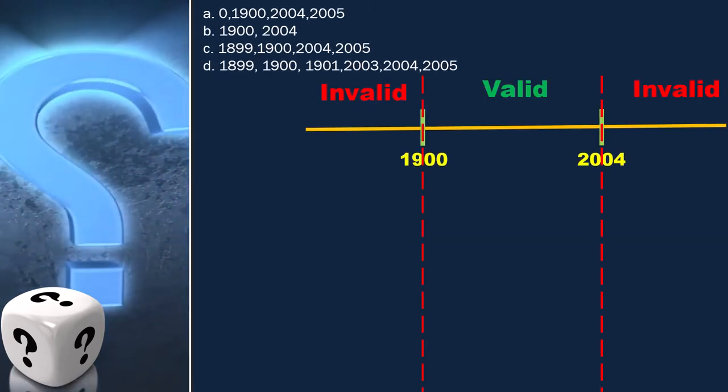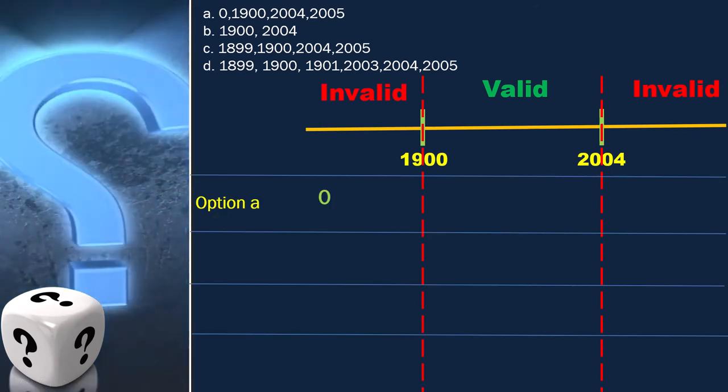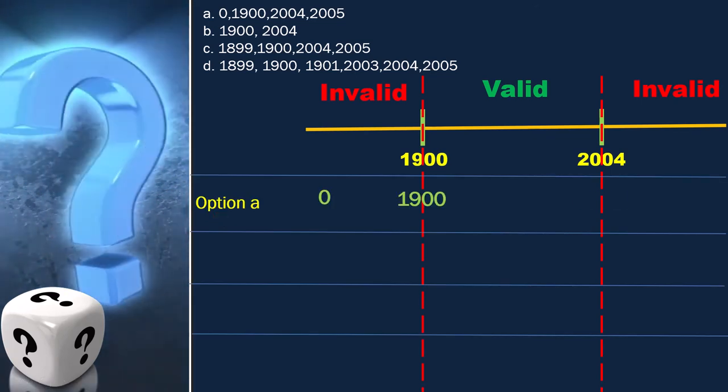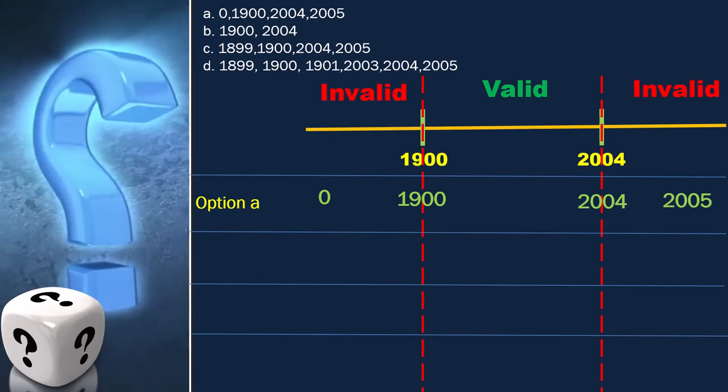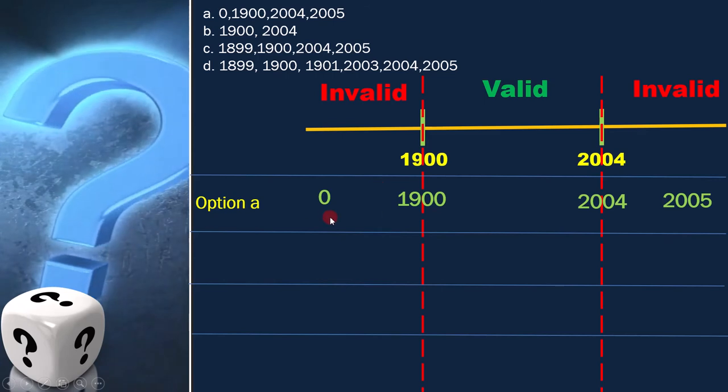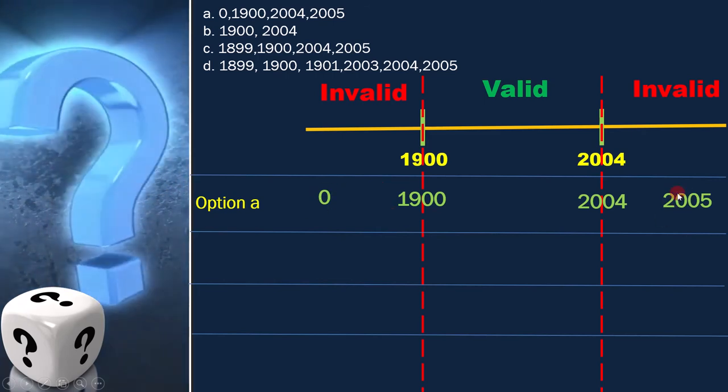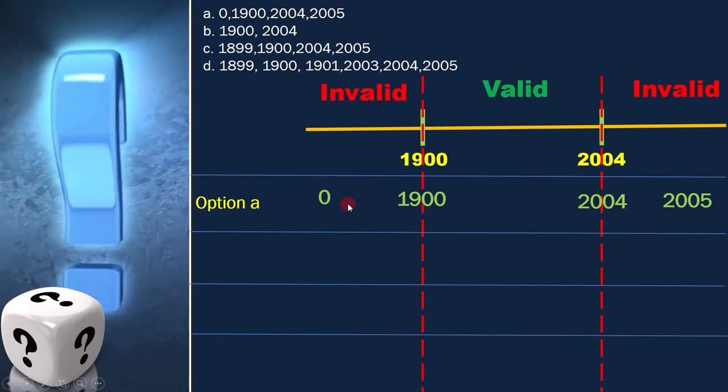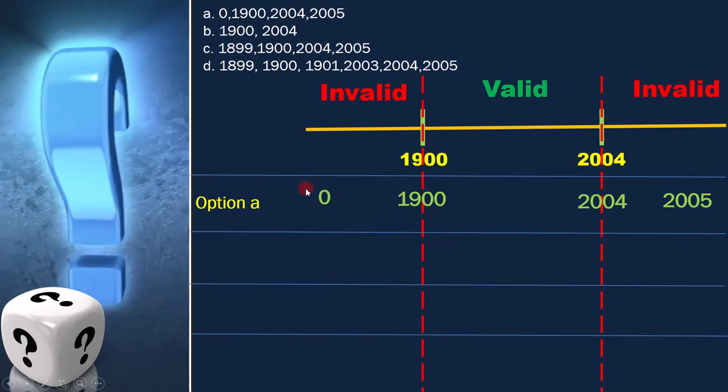Now we have to select the correct options. Let's start with the first option: 0, 1900, 2004, and 2005. This is how we can place them. Here, 0 and 2005 are outside the boundary, but 0 is not near 1900. That is why this is not the correct option.